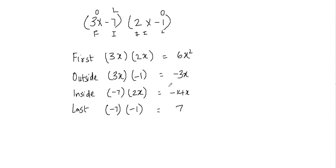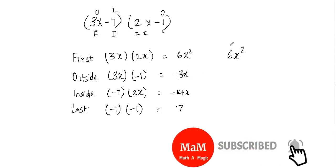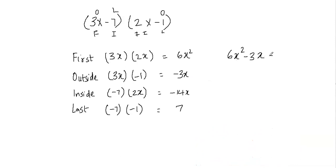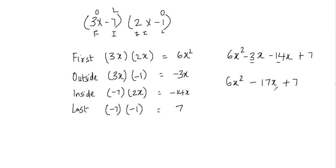Now we have multiplied all the terms. We're going to add all these and combine the like terms. So let's put 6x squared first because that's the highest exponent. Then we have negative 3x and negative 14x, and then positive 7. We can combine those two like terms: negative 3x minus 14x equals negative 17x. So the final answer is 6x squared minus 17x plus 7, written in standard form.